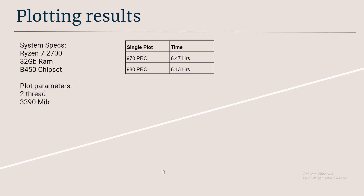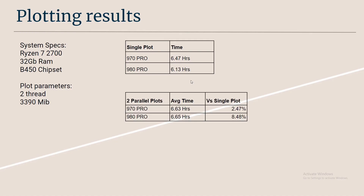Looking at the results, I'm using default plotting parameters: two threads, 3,390 MiB, running on a system with a Ryzen 7 2700, 32 gigabytes of RAM, and a B450 chipset. The 980 Pro doing one single plot definitely has the advantage — it's slightly faster than the 970 Pro in terms of time.